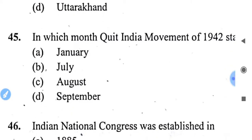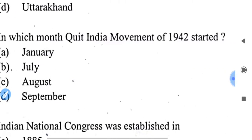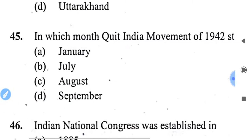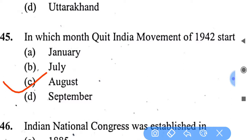In which month was the Quit India Movement of 1942 started? The Bharat Chhodo Andolan was started in August. So the right answer is August.